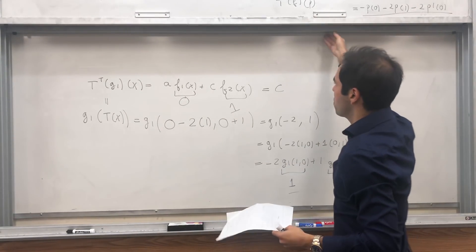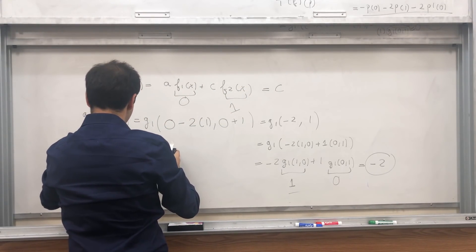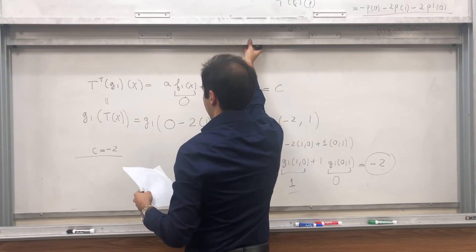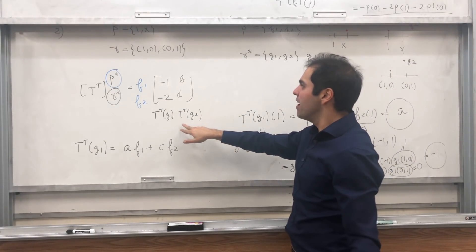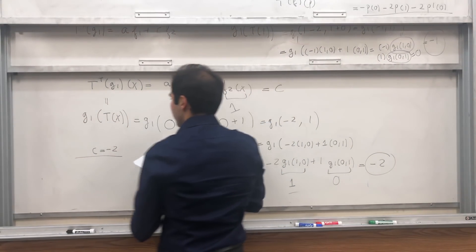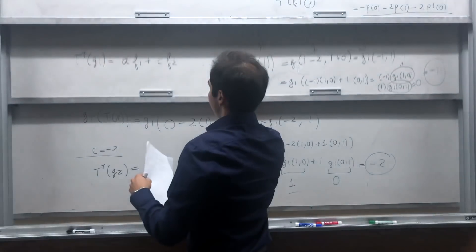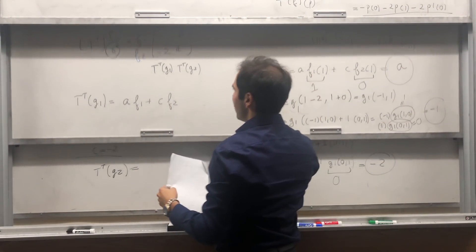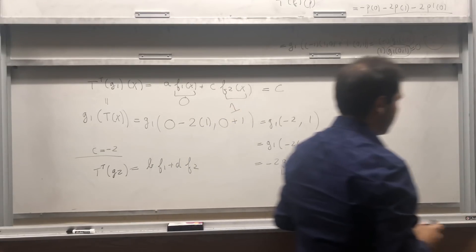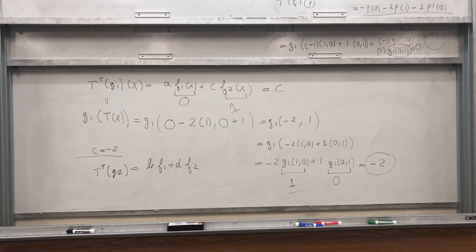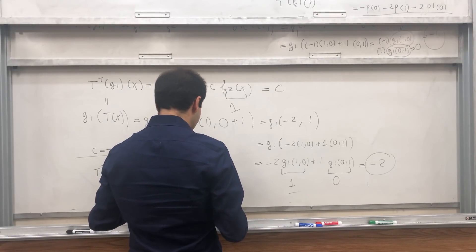So again, going back all the steps, C is minus 2. And the question is, how do you figure out the other ones? Entirely similar, but you start with T transpose of G2, so the point is that T transpose of G2 equals B times F1 plus D times F2. I think we should find that B is 1 and D is 0. If again, I take this equality, apply it to 1 and apply it to X, and then you finally get that this matrix I believe is just minus 1, minus 2, 1, 0.